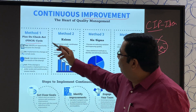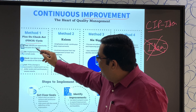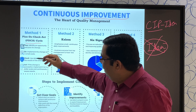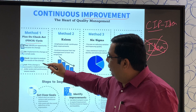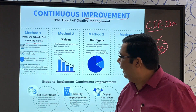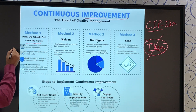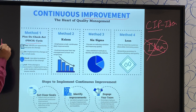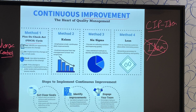You can use method one: Plan, Do, Check, Act. You have to plan, then implement the change, then check whether the change is correctly implemented or not, and then act. Basically, if you see the PDCA cycle, this is nothing but the change control. I am just making you aware of how simple things are — PDCA is nothing but a part of the change management system.